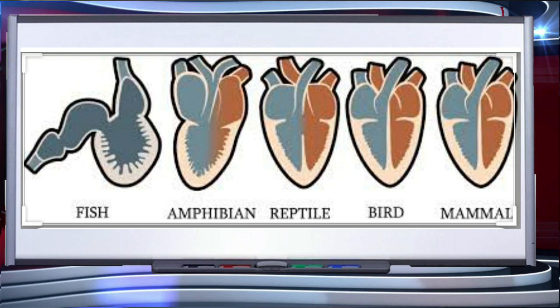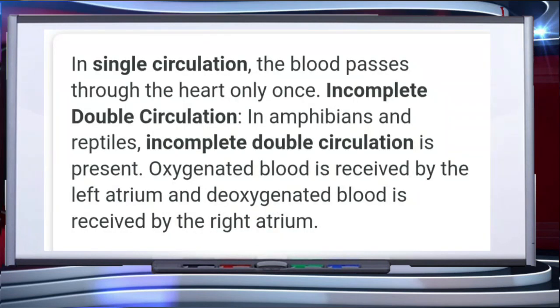In amphibians and reptiles, the left atrium receives oxygenated blood from the lungs and the right atrium receives deoxygenated blood from the body parts, shown in blue in the figure. These get mixed up in the single ventricle, since the heart is three-chambered, which pumps out mixed blood.